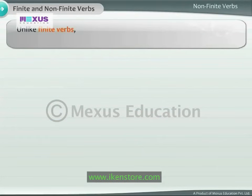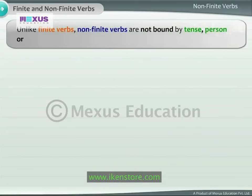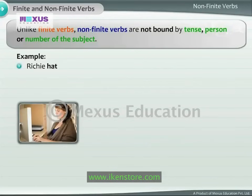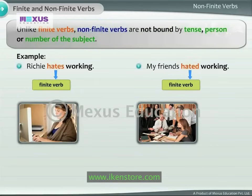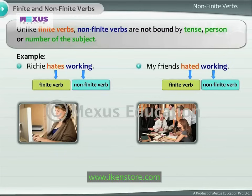Unlike finite verbs, non-finite verbs are not bound by tense, person, or number of the subject. Let us read these two sentences: 'Richie hates working' and 'My friends hated working.' Both sentences have finite and non-finite verbs. The verb 'hate' is the finite verb — it is bound by tense, number, and person. However, the verb 'working' is a non-finite verb. It does not change even though the person, number, and tense of the sentence changes.